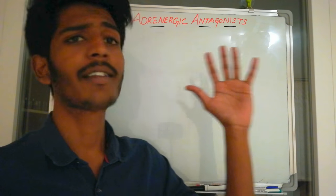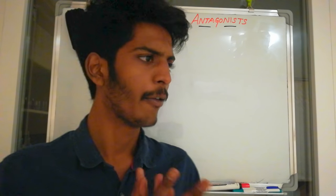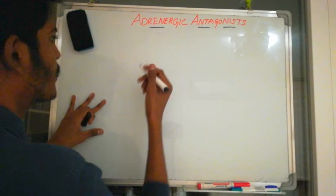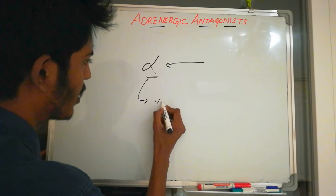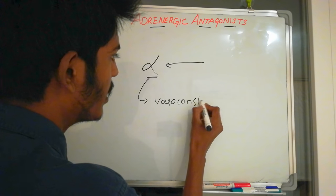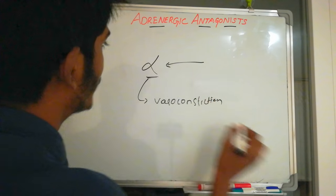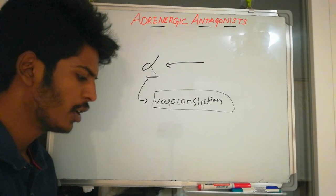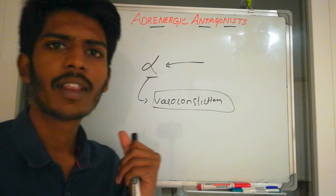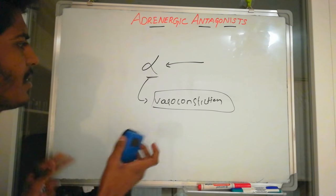Today we'll discuss adrenergic antagonists. An antagonist is any substance that binds to a receptor and blocks the normal activity produced by triggering that receptor. For example, if we stimulate an alpha receptor it produces vasoconstriction, but when that receptor is blocked by an antagonist, vasoconstriction is not produced. So adrenergic antagonists are substances that block adrenoreceptors.